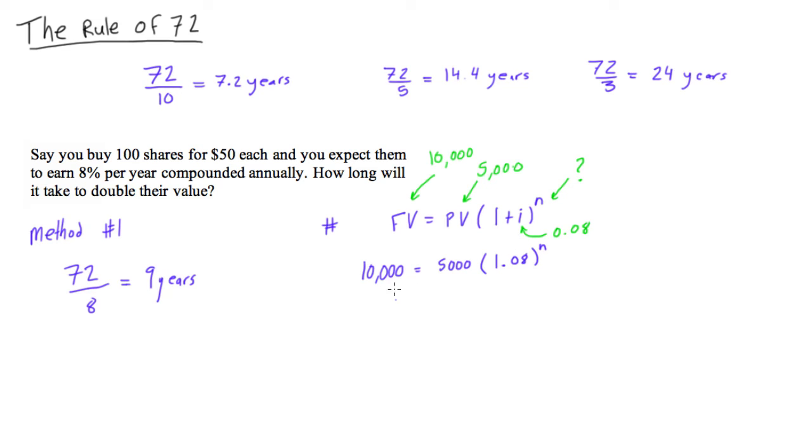Okay, so if we just move this over and rearrange a little bit, we'll get 2 is equal to 1.08 to the n. Now if we just log both sides, you get log 2 is equal to n log 1.08. Right, because if we have log of something with an exponent, you just bring the exponent down.